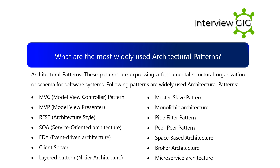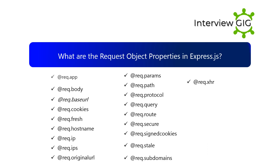What are the request object properties in Express.js? They include: req.app, req.body, req.baseUrl, req.cookies, req.fresh, req.hostname, req.ip, req.ips, req.originalUrl, req.params, req.path, req.protocol, req.query, req.route, req.secure, req.signedCookies, req.stale, req.subdomains, and req.xhr.